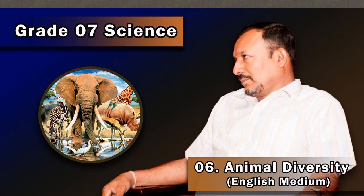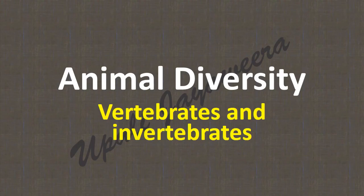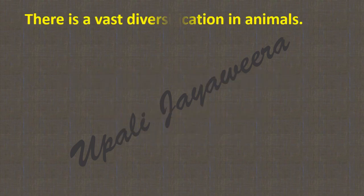Welcome to my YouTube channel, Grade 7 Science. Today I am going to discuss with you a second term lesson: animal diversity. In this lesson we have to discuss more about vertebrates and invertebrates. There is a vast diversification in animals.